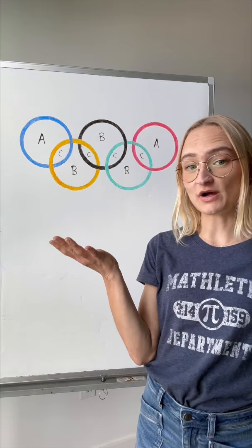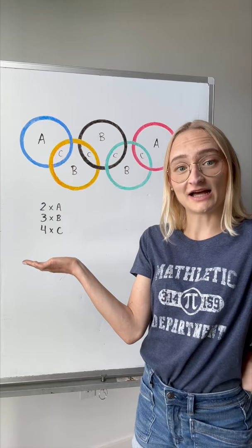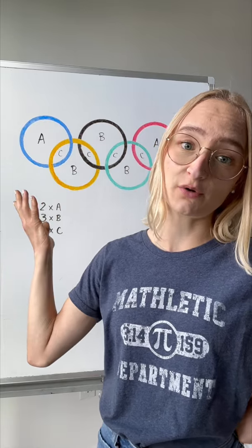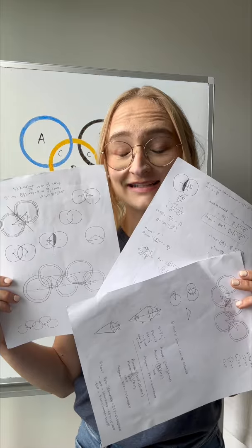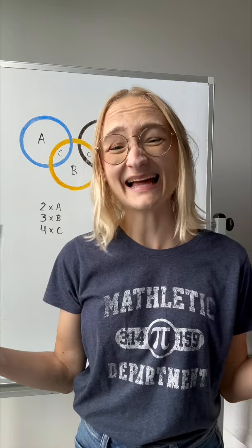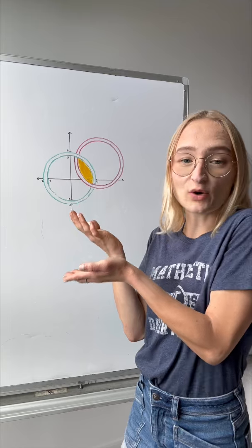The good news is there's a lot of repetition in this logo, so we only need to find three areas, do some simple multiplication, and add them all up. When I first started doing these calculations I used geometry — each ring is a circle within a circle, so every intersection of two rings is actually four circles total. After a lot of diagrams and trig calculations, I decided to switch to calculus.